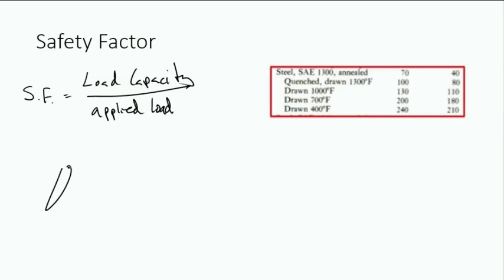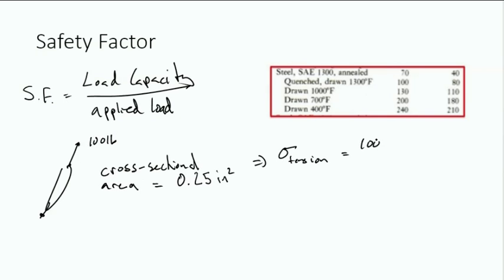For example, if we have a two-force member with a 100-pound force and a cross-sectional area of 0.25 inches squared, we can find the stress in tension of this member is equal to 100 pounds over 0.25 inches squared. This is 400 PSI.